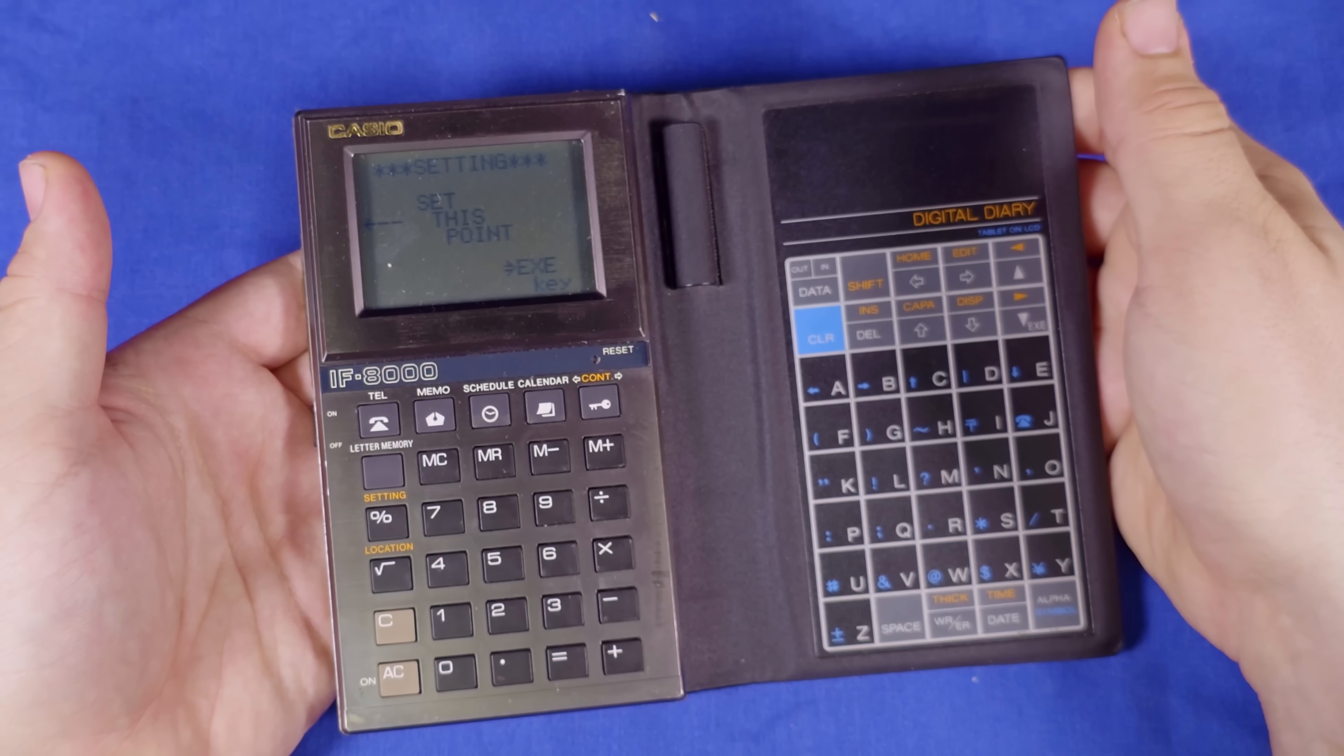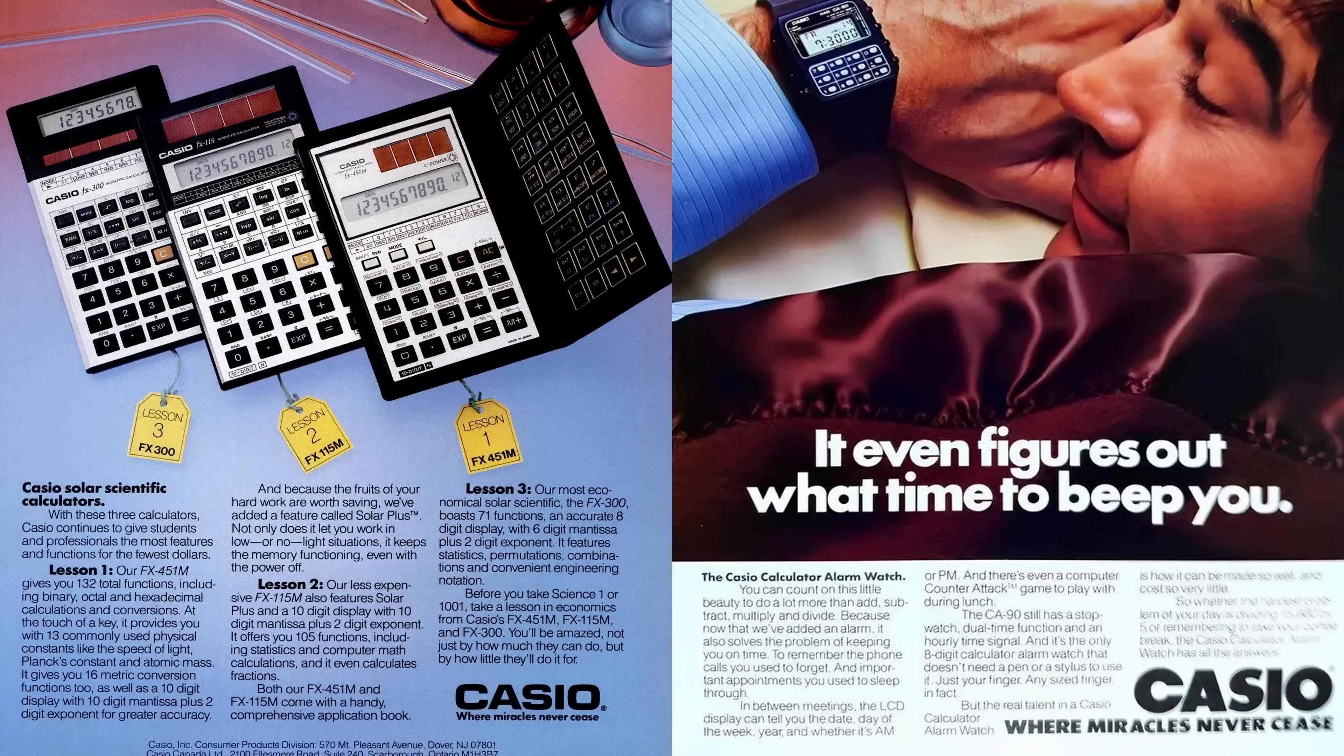The IF8000 also does not have a clock and there is no provision for storing the date or time. All settings does is let you recalibrate the touch matrix. I can't but wonder if Casio didn't give it these features to avoid it hurting the sales of their other devices.